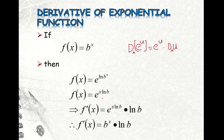So in this case, our u is x ln b. Using this formula, we have f prime of x is equal to e to the x ln b times the derivative of u.